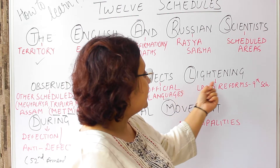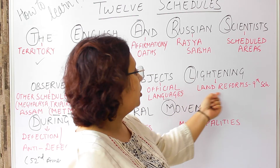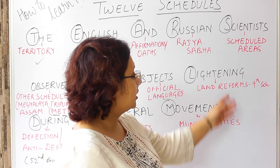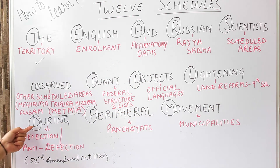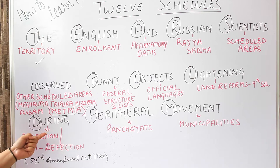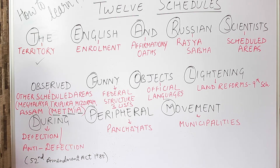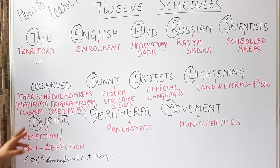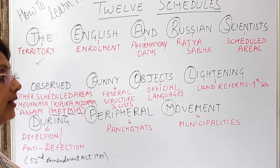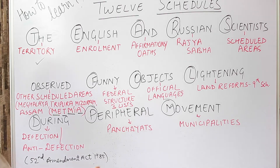From 'Lightning' we take L for Land Reforms — the 9th schedule. Next is 'During' — we take D for Defection and Anti-Defection, which is the 10th schedule. Anti-defection was brought in by the 52nd Amendment Act in the year 1985. That's another general knowledge point you can note down.